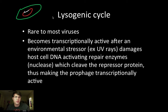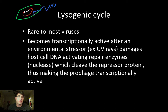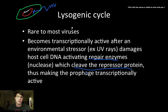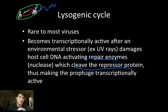Through some type of environmental stress — say, UV rays — anything that would cause damage to the bacterial chromosome activates certain types of repair enzymes that are going to cleave the repressor protein, thus making the prophage transcriptionally active again. If the prophage becomes transcriptionally active, we have not only the host chromosomes being degraded, but phage viruses building up inside, which can ultimately burst and end in lysis.